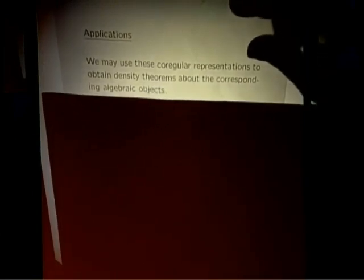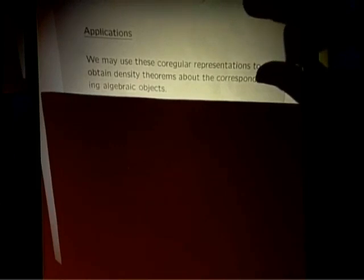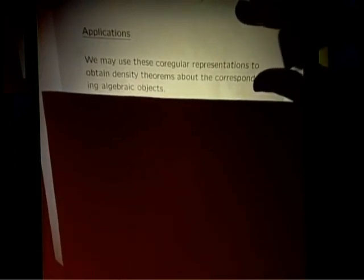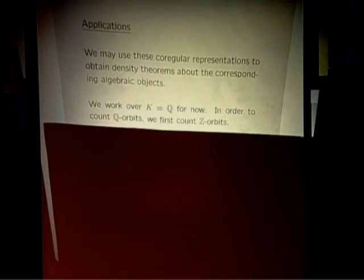I want to talk about some of the applications today. Just like in the prehomogeneous case, we can use these co-regular representations to understand the arithmetic statistics of the objects being parametrized — in this case elliptic curves and models of those elliptic curves, the genus 1 curves. Let's fix the field k = Q for now, although the same ideas apply over any number field. Since these are geometric objects, we usually think about them over the rational numbers. Our techniques — geometry of numbers — count integer points naturally, so to count rational orbits we'll count integral orbits.